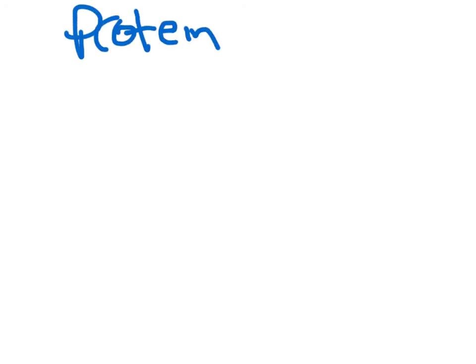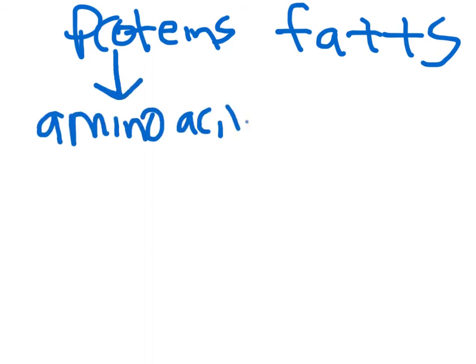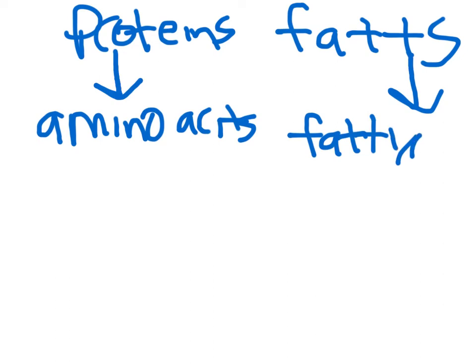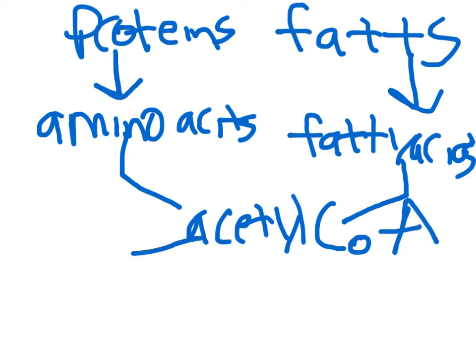There's a chart that helped illustrate how proteins and fats are processed. Proteins break down into amino acids, and fats and fatty acids all end up as acetyl-CoA, which then goes into the citric acid cycle, also known as the Krebs cycle.